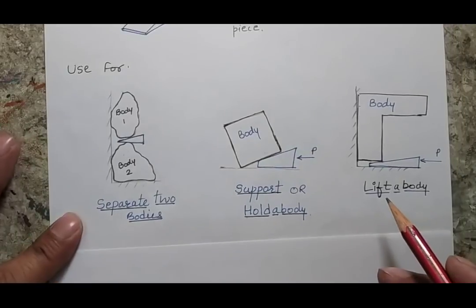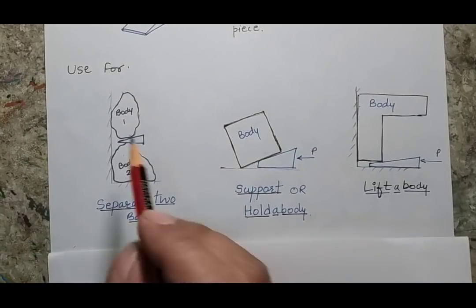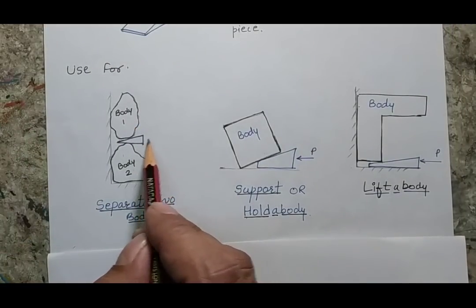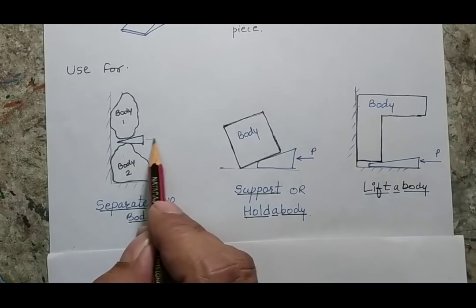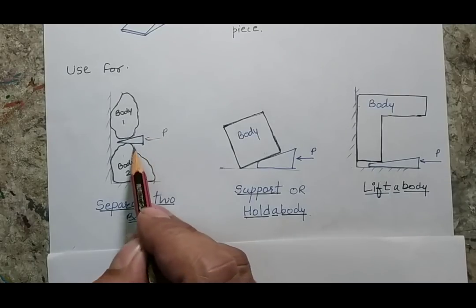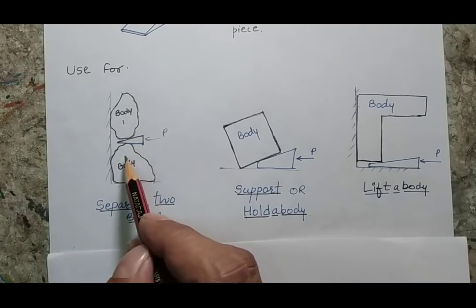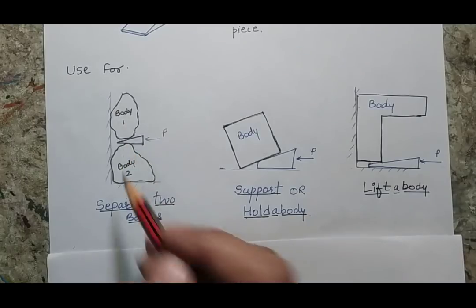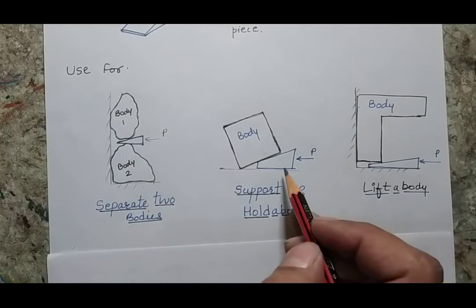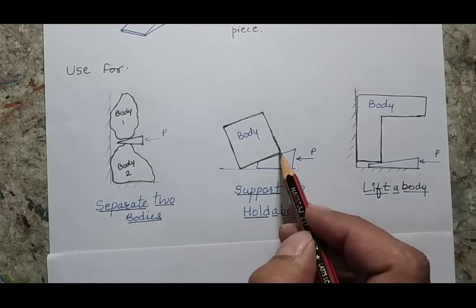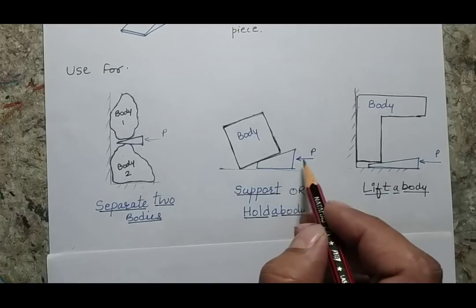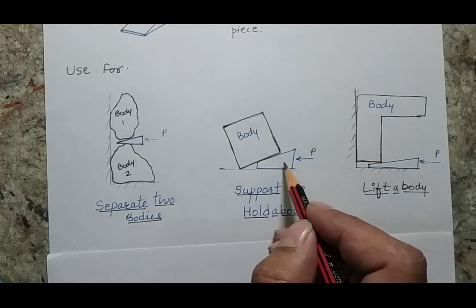For example, these are two bodies, body 1 and body 2. If I insert a wedge by applying a force P, these two bodies will now separate away. Secondly, if I want to hold the body in an inclined position, I can insert a wedge.